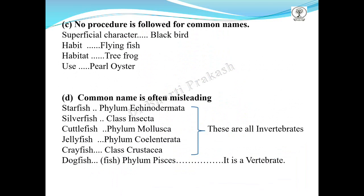For example, consider the names starfish, silverfish, cuttlefish, jellyfish, crayfish, and dogfish. Starfish belongs to phylum Echinodermata; silverfish to phylum Arthropoda, class Insecta; cuttlefish to phylum Mollusca; jellyfish to phylum Coelenterata; and crayfish to phylum Arthropoda, class Crustacea. All of these are invertebrates, yet their common names suggest they are fish. Dogfish is the only actual fish here, belonging to phylum Pisces and is the only vertebrate. So these common names are often misleading.